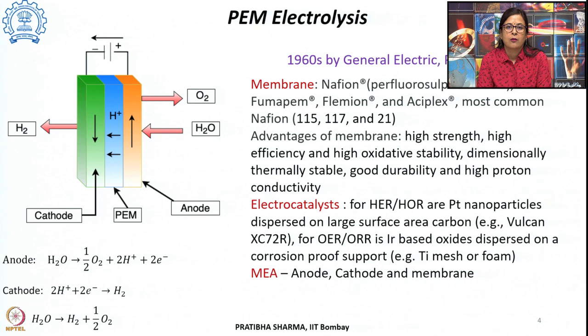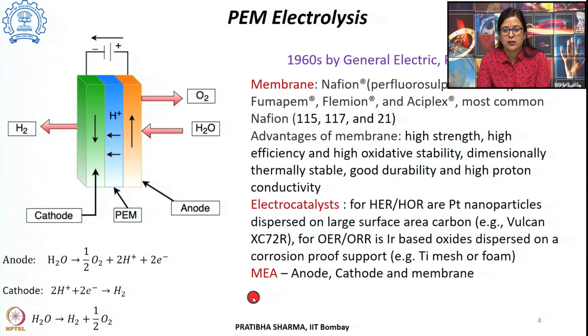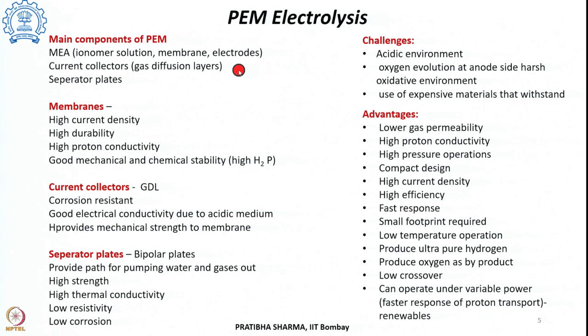This method of electrolysis is more expensive compared to alkaline water electrolysis. The anode, cathode, and membrane are integrated together to form a unit known as the membrane electrode assembly (MEA). The major components of PEM electrolysis are the MEA (ionomer solution, membrane, and two electrodes), the current collectors or gas diffusion layer (GDL), and the separator plates or bipolar plates.